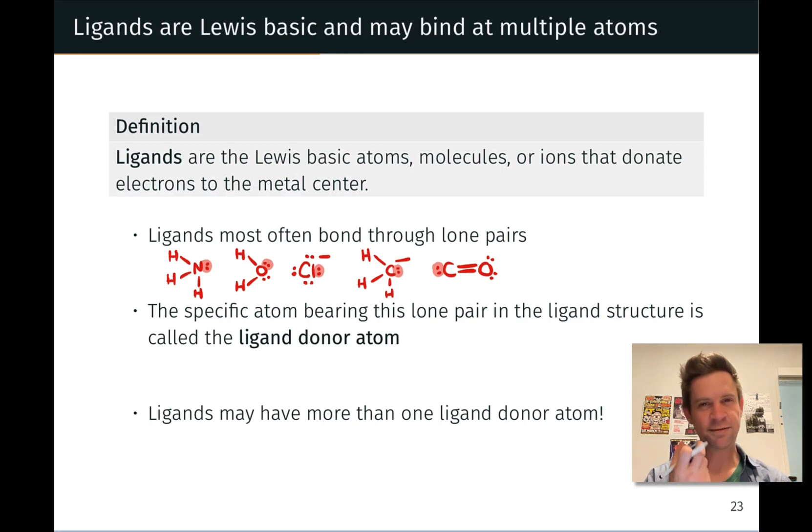The specific atom that bears the lone pair that's donated to the metal center is what we'll call the ligand donor atom. So for example, when cyanide binds to a metal center, it typically does so through the carbon, and when that carbon is linked to the metal through a dative bond, the carbon is the ligand donor atom.